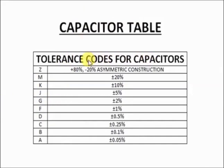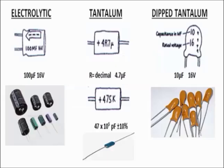In this table you can see the tolerance codes for capacitors. The letters used for tolerance are Z, M, K, J, G, F, D, C, B, and A. Each of those letters has a corresponding equivalent percentage for its tolerance. You need to memorize this when reading capacitor specifications.